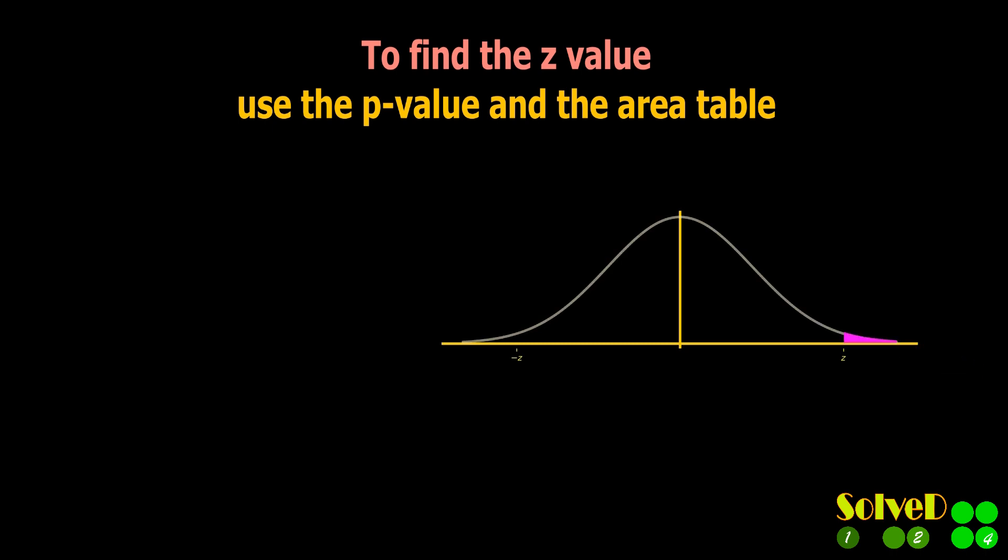Use the given p-value to find the area to the left of z. The total area is 1, so the area to the left is 1 minus p by 2.